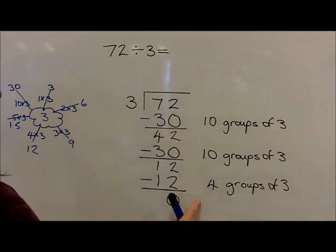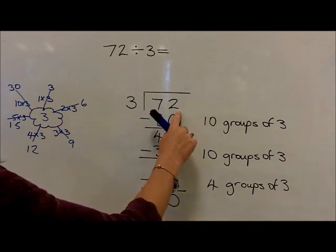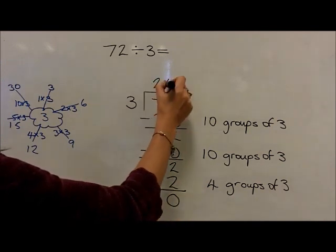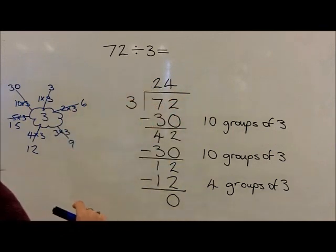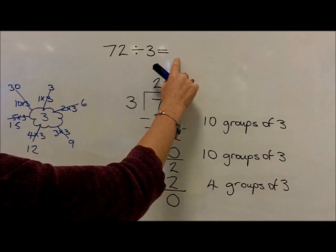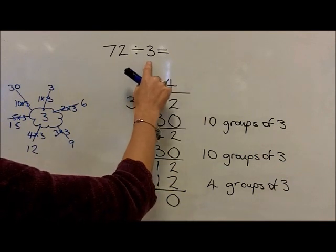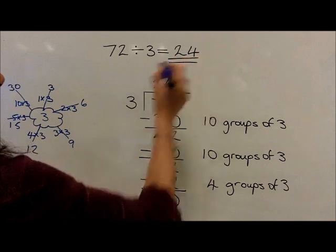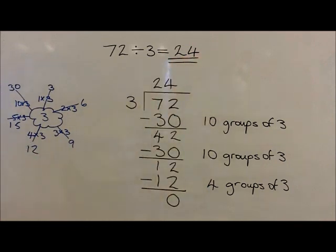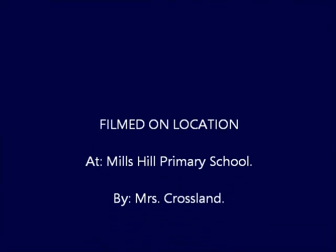Therefore, we've subtracted 24 groups of 3 from 72. So 72 divided by 3 is equal to 24, which we can now write as the final answer.